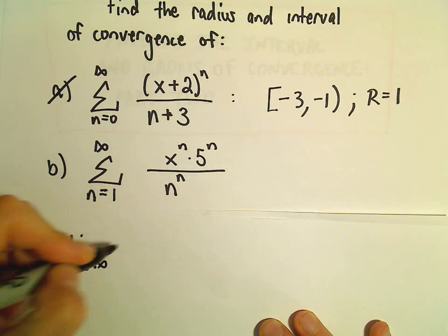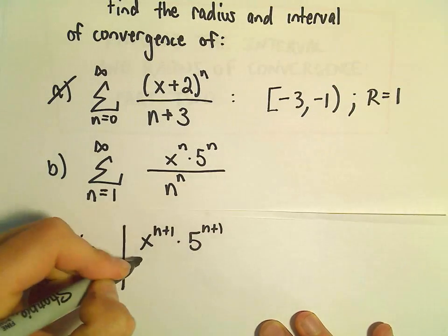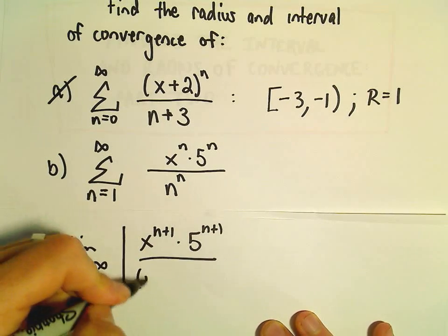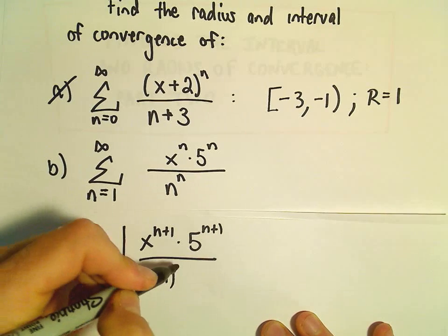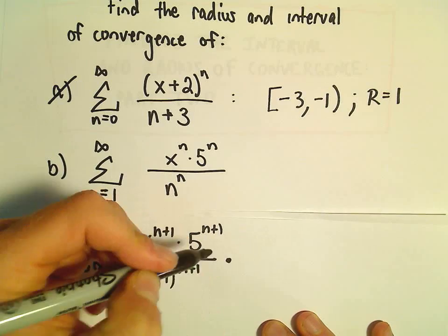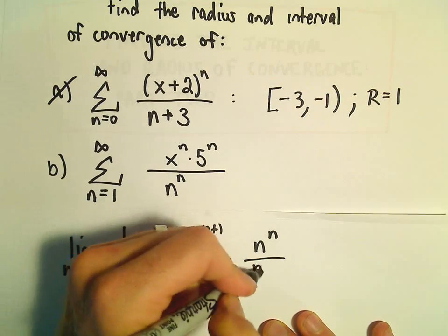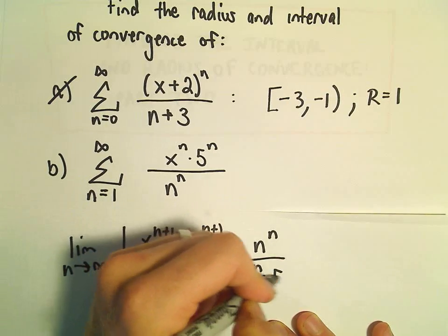So we'll do the limit as n goes to infinity, x raised to the n plus 1, 5 raised to the n plus 1, and then we'll divide this by n plus 1 raised to the n plus 1 power. We're going to multiply by n raised to the n over x to the n times 5 to the n.